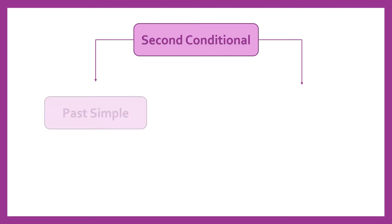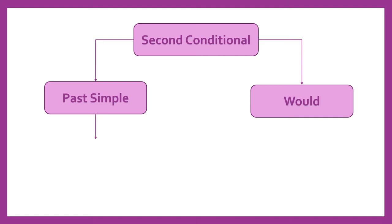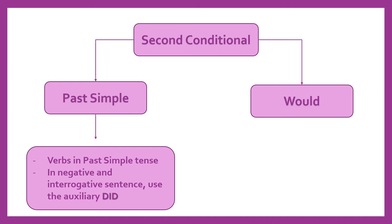In the second conditional we have two main characteristics. In the first case we have the past simple, and next we have the modal verb 'would'. In the case of the past simple, in a positive sentence verbs go in past simple tense, and in the negative and interrogative sentence we use the auxiliary 'did'.